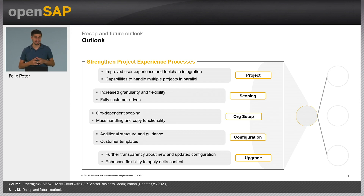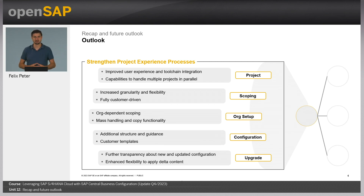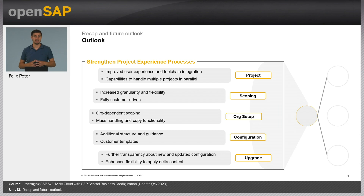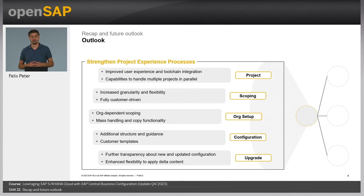Looking at the org setup, one important aspect — tied to scoping granularity — is org-dependent scoping. As of today, we provide each org entity with the same set of scopes, so if you create one company code, another will have the same scope. Going forward, our intent is to provide a more granular scoping experience, so you can define the scope of each company code and each plant individually — a clear demand from many customers. Another important aspect is mass handling and copy functionality for org entities, which will simplify creation of new entities and provide faster time to value during implementation.